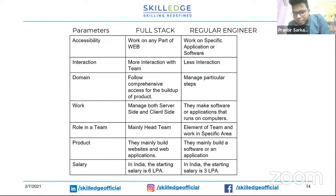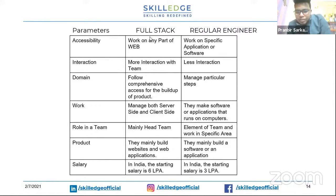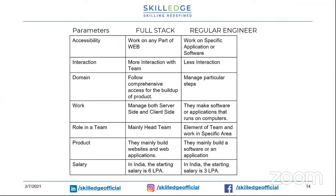Most companies use web apps nowadays instead of desktop apps. So a full stack developer is someone who can work on any part of the web. But a regular engineer works on some specific application — for example, a C or C++ developer who works on a particular part. When he gains two to three years of experience, he will become a master, but still works on that particular part only.